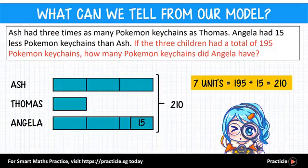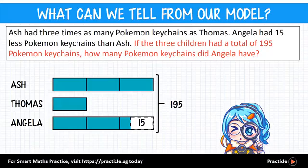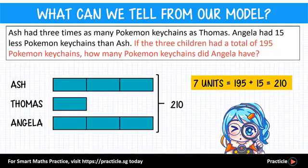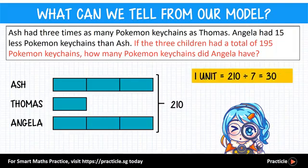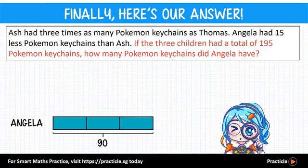Since we are solving for the number of Pokemon keychains that Angela had, let's refer to our model again. From the model, we can tell that Angela had 3 units minus 15. Since we know that 7 units equals 210, we can find the value of 1 unit by taking 210 divided by 7, which gives us 30. Multiplying 30 by 3 gives us 90 for 3 units, and 90 minus 15 gives us a final answer of 75.